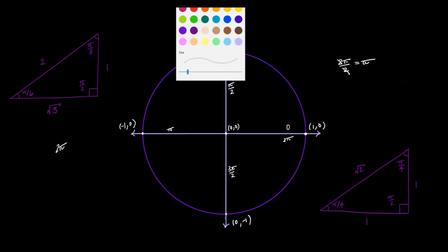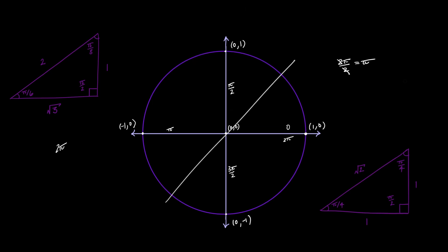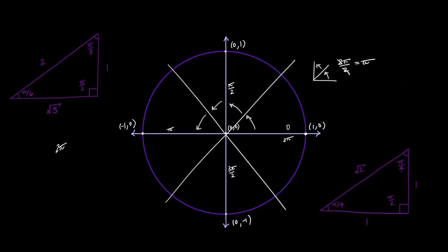We can further divide the circle by taking all of the pieces we had before and dividing them in half. Looking at the 2 pi section divided in half, we've made 4 total divisions of the pi section, which means each segment must be pi over 4 radians. So the first one from 0 is pi over 4. Going one more is 2 pi over 4, which reduces to pi over 2. One more gives 3 pi over 4, which is the label for that arm.